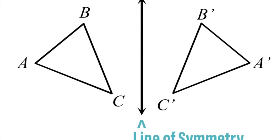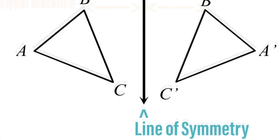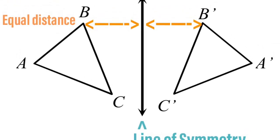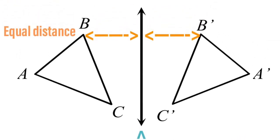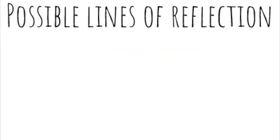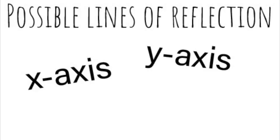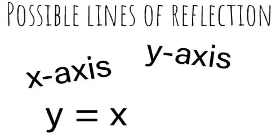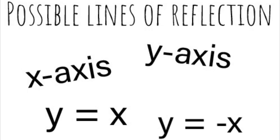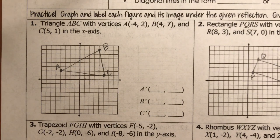With a reflection, we reflect over the line of symmetry, which is usually in the center, making the points equal distance apart from that line. There are different possible lines of reflection: the first is the x-axis, then the y-axis, the y equals x line, and finally the y equals negative x line.